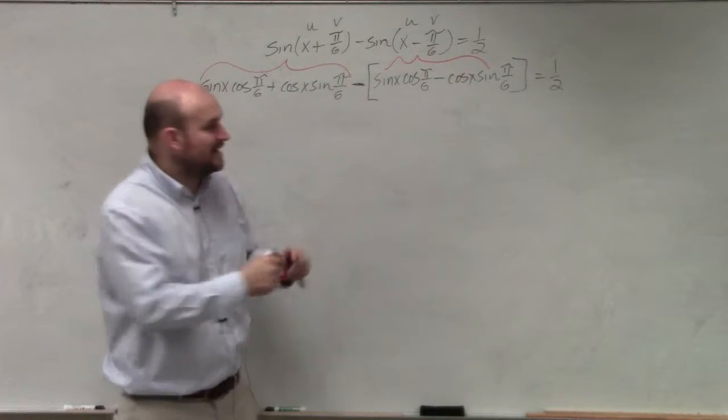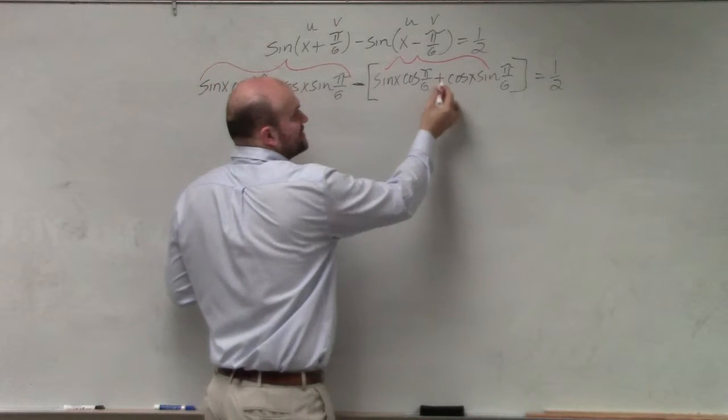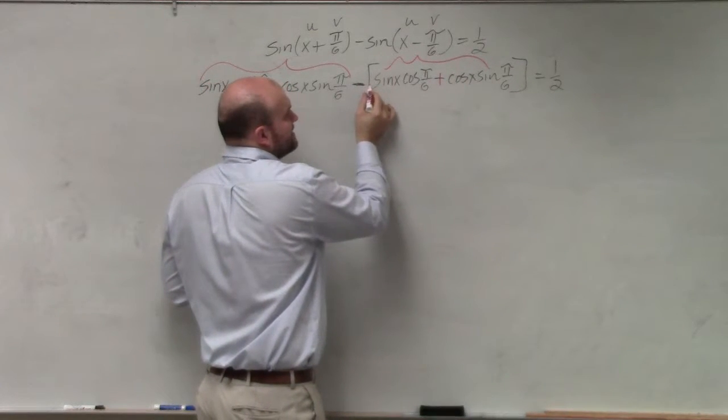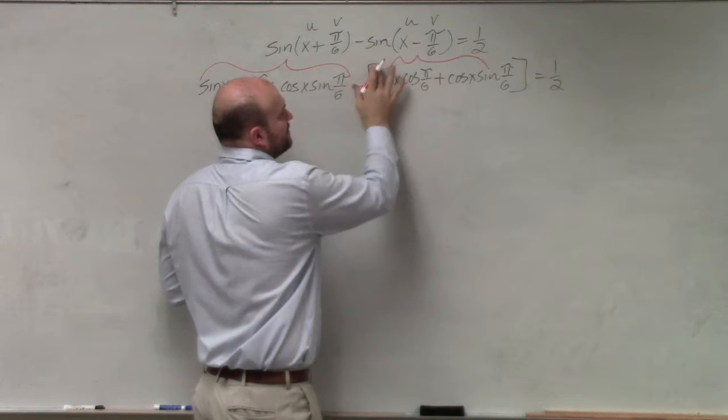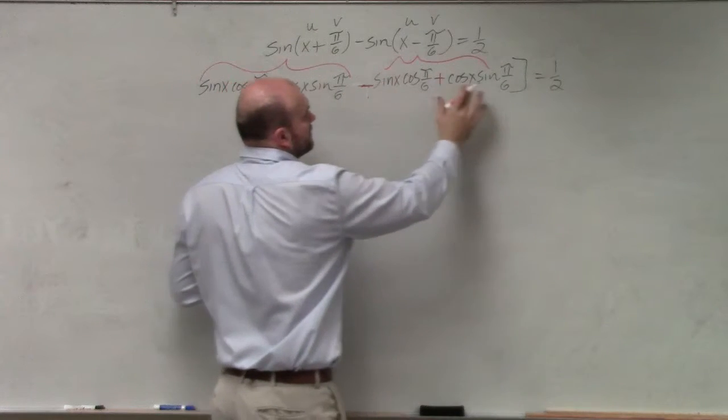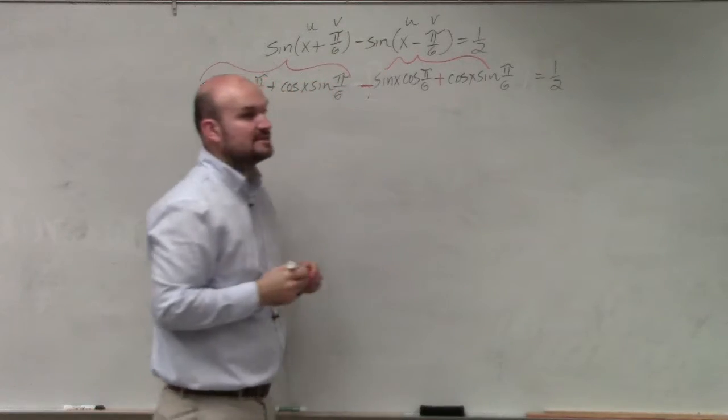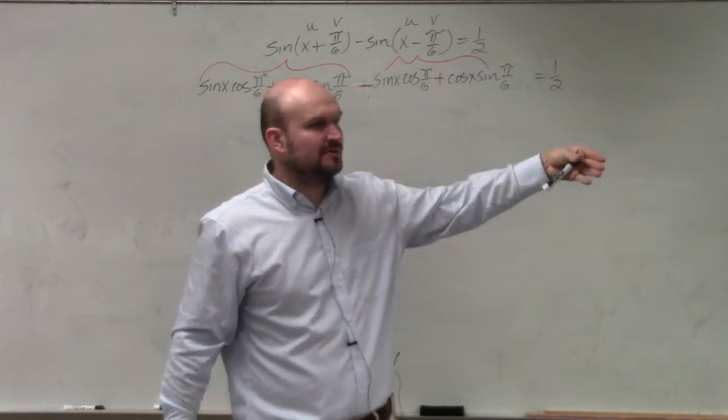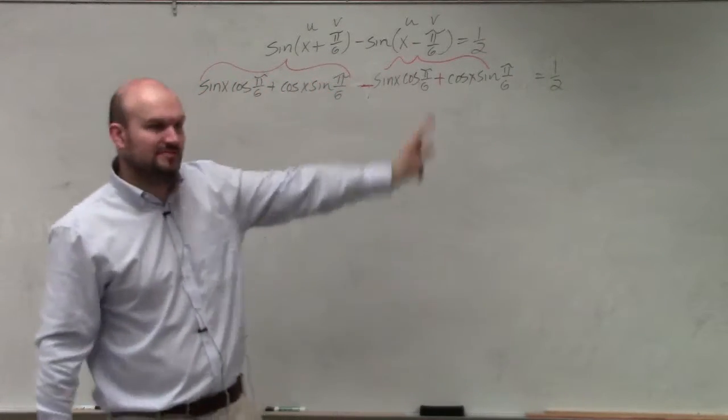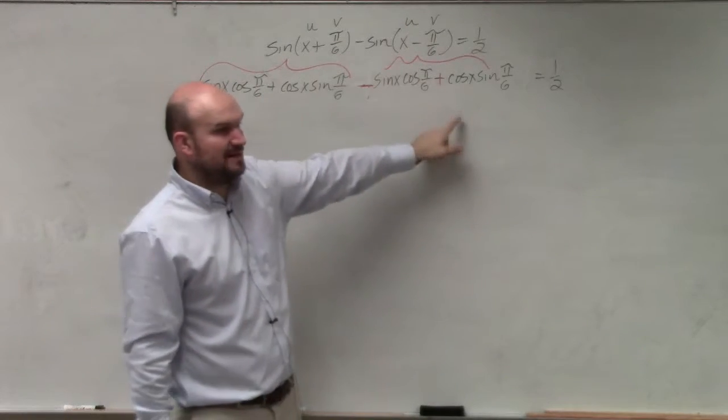So I can get rid of the brackets. I just need to make sure that that's positive and this is negative. Yes, all I did was apply distributive property with that negative. I distributed the negative to both of them, so that made that negative and that positive.